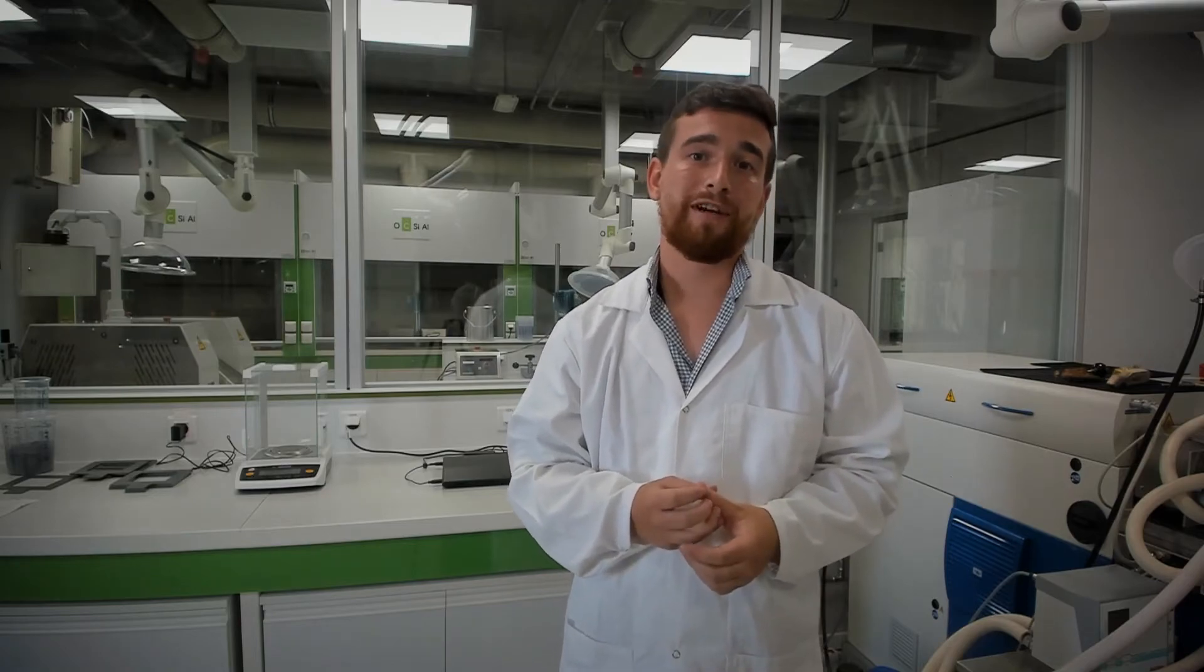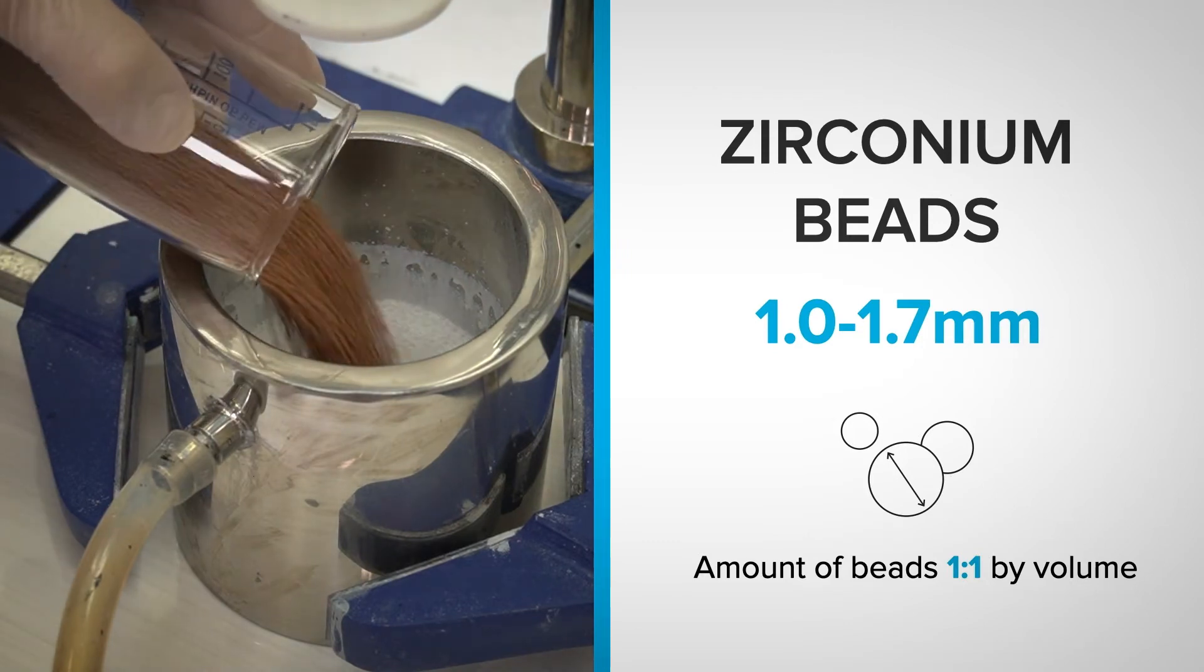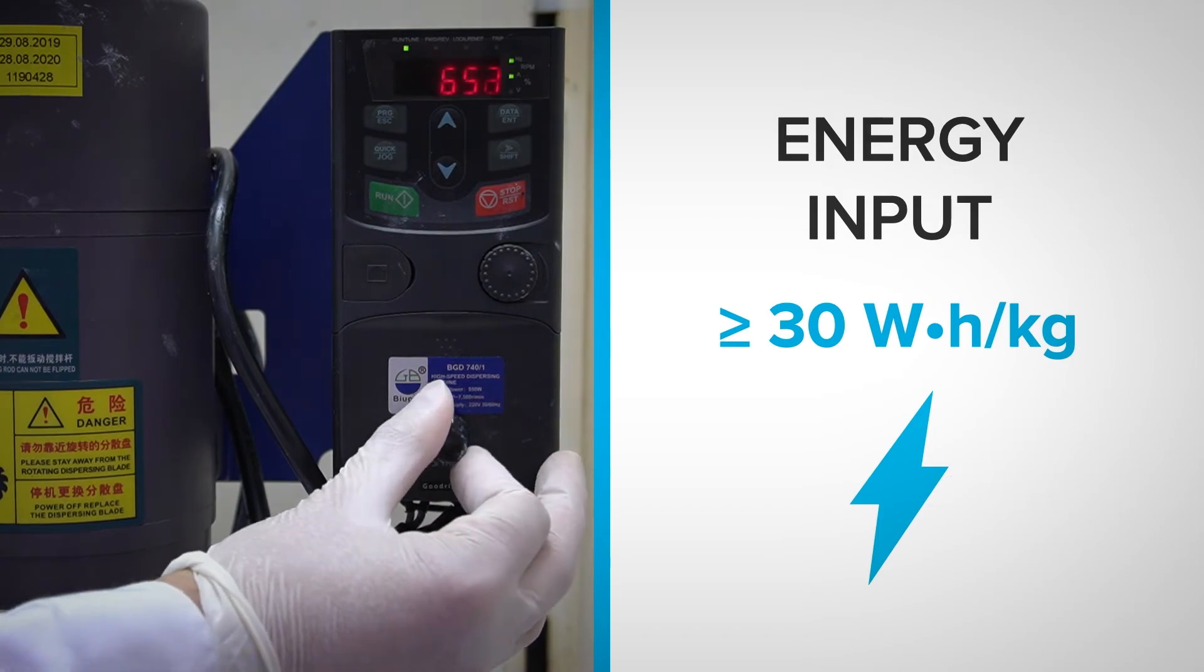If the primer formulation can be built from scratch, we have some suggestions to make. The first one would be to improve the dispersion of our nanotubes in your system using a bead mill with optimum zirconium bead diameters from 1 to 1.7mm and using a specific energy input of at least 30Wh per kg. The Tuball matrix will be added at the same stage you also add your other fillers and the coloring pigments.